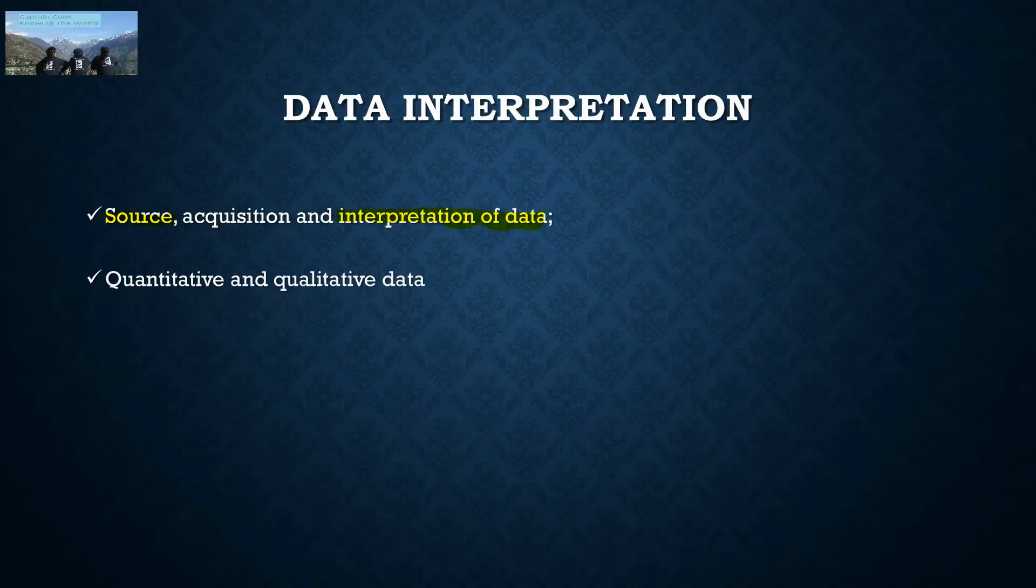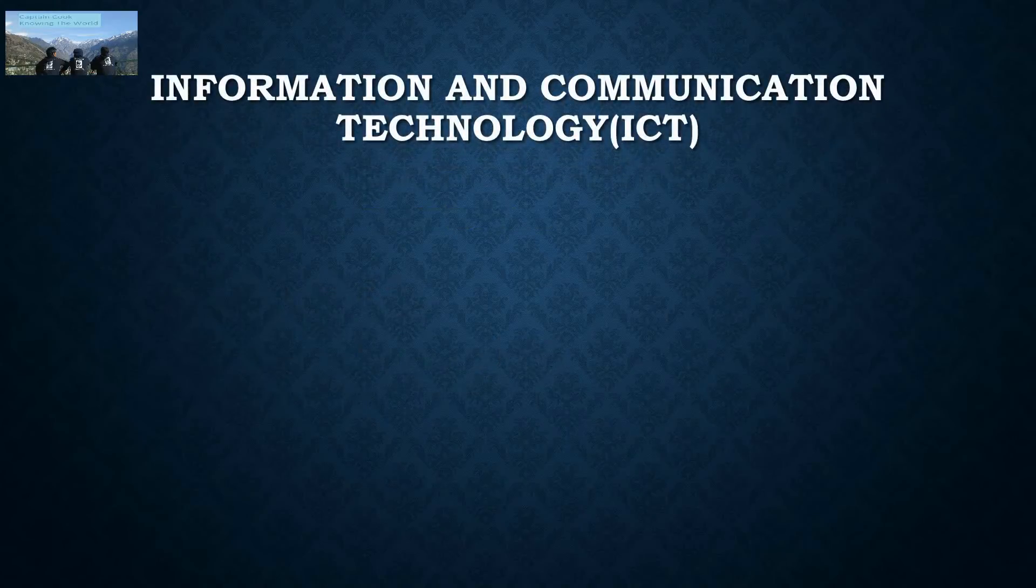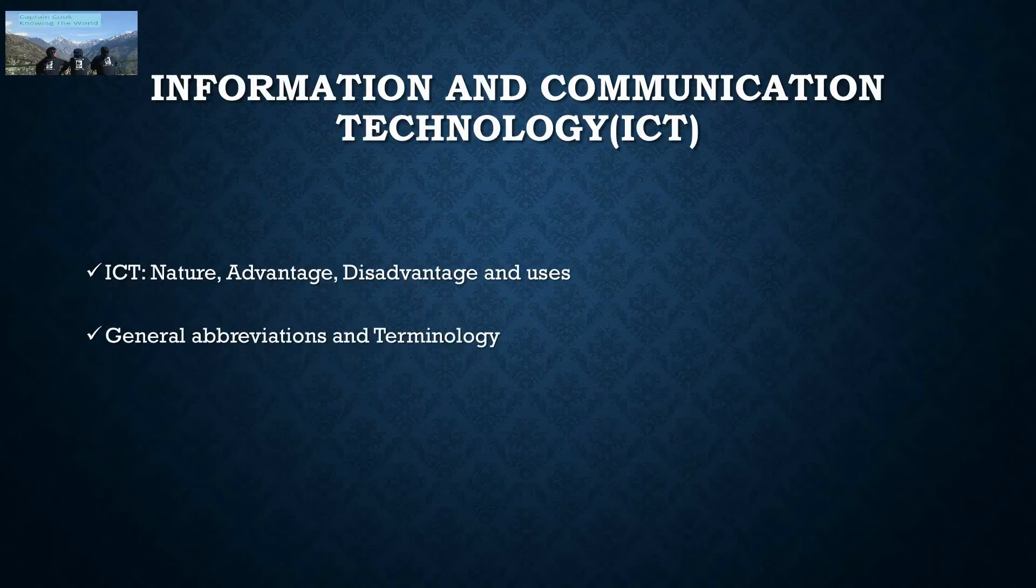ICT is basically Information and Communication Technology, in which nature, advantages, disadvantages, their uses, general abbreviations and terminology, basics of internet and emailing. It is basically a general part in which every person knows it, and it is a static part. You'll know these things in any book if you're reading, and that is sufficient.